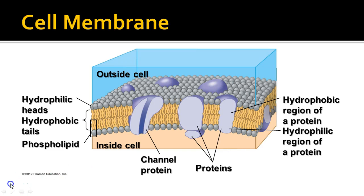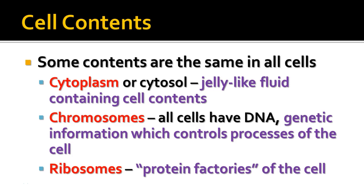Inside the cell, there are some contents that are the same in every kind of cell. All cells have a cell membrane, as we just mentioned. They all have cytoplasm, sometimes called cytosol — a jelly-like fluid containing the cell contents, a watery solution with lots of proteins, salts, and other molecules necessary for the cell. All cells have DNA in the form of chromosomes, which control the processes of the cell. And all cells have ribosomes, which are the protein factories of the cell.